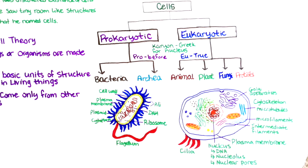These cilia have a rhythmic wave or beating motion. They work, for instance, to keep the airways clear of mucus and dirt, allowing us to breathe easily and without irritation. The mitochondria is the site of energy metabolism and synthesis of high-energy ATP.